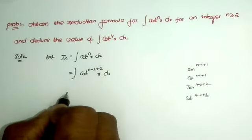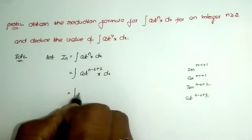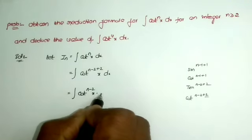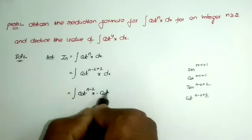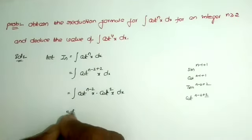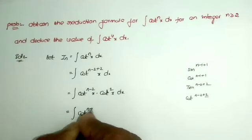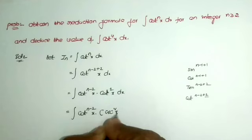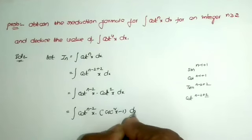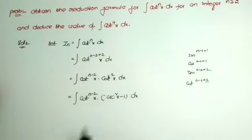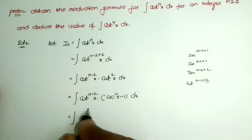Splitting the power, this equals the integral of cot^(n-2) x times cot² x. And cot² x equals cosec² x minus 1. So this becomes the integral of cot^(n-2) x times (cosec² x minus 1), and multiplying the two values.